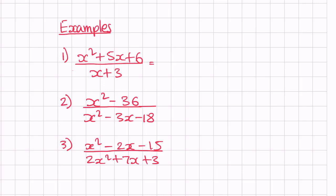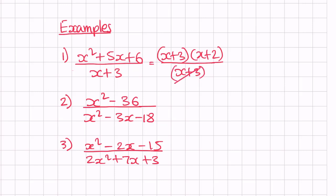We have x squared plus 5x plus 6. We can factorize it using 3 and 2 in brackets: x plus 3 and x plus 2. We have x plus 3 in the denominator, so we can cancel out x plus 3. That leaves us with x plus 2, and that's the answer.